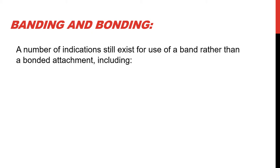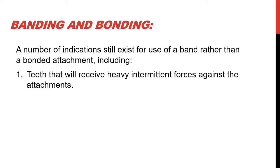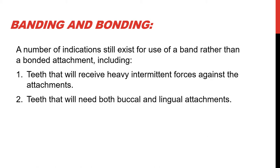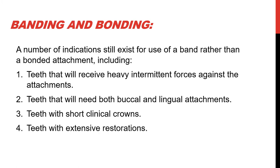There are a number of indications that still exist for the use of a band rather than a bonded attachment. These include teeth that will receive heavy intermittent forces against the attachment — for example, when we have an upper first molar to which an extra-oral force is placed via a headgear. Secondly, teeth that will need both buccal and lingual attachments, such as a molar with both a headgear tube and a transpalatal bar. Thirdly, teeth with short clinical crowns so that bonded brackets are difficult to place correctly. And finally, teeth with extensive restorations.